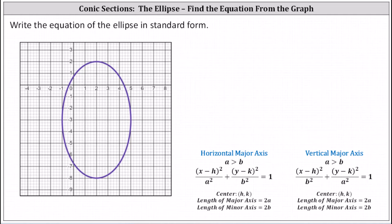Notice this ellipse has a vertical major axis — this axis here — and a horizontal minor axis — this axis here. The point of intersection of the two axes is the center. Notice the center is the point two comma negative three.